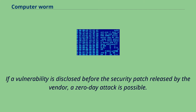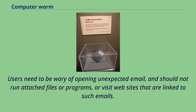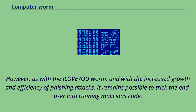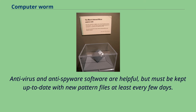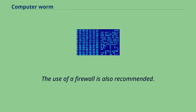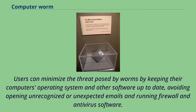Users need to be wary of opening unexpected email and should not run attached files or programs, or visit websites that are linked to such emails. However, as with the I Love You worm and with the increased growth and efficiency of phishing attacks, it remains possible to trick the end-user into running malicious code. Antivirus and anti-spyware software are helpful but must be kept up-to-date with new pattern files at least every few days. The use of a firewall is also recommended. Users can minimize the threat posed by worms by keeping their computer's operating system and other software up-to-date, avoiding opening unrecognized emails, and running firewall and antivirus software.